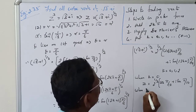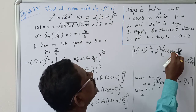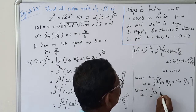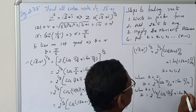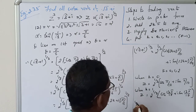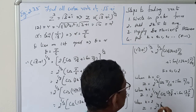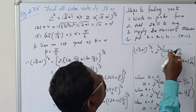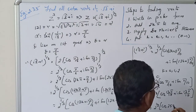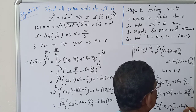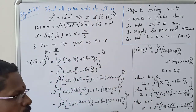When k equals 1: z equals 2^(1/3) · [cos(13·5/18) + i·sin(13·5/18)]. When k equals 2: z equals 2^(1/3) · [cos(25·5/18) + i·sin(25·5/18)]. These are the three cube roots of this equation.